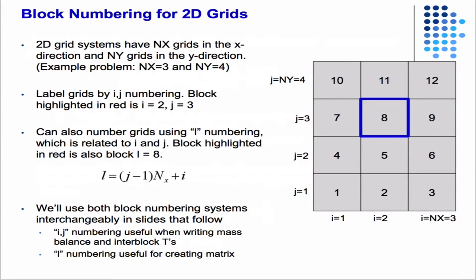In order to deal with these 2D systems, we introduce some new index notation. We're borrowing from the 1D case where we used i as an x-direction index. We introduced a new index j which goes in the y-direction, and additionally we have this index L which is just the grid block number. With i, j, and nx, we can define this relationship between the two.